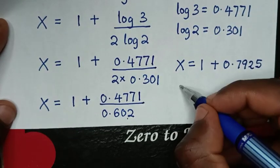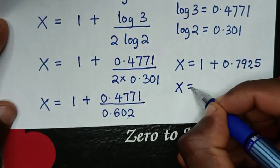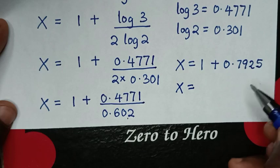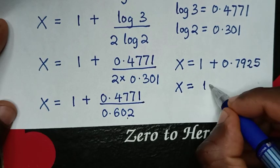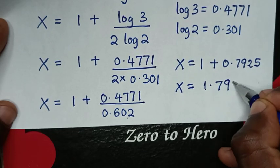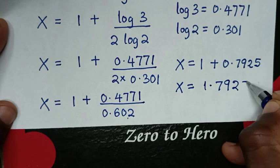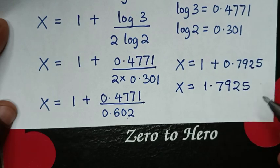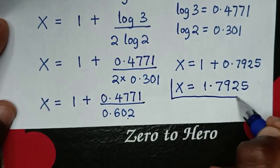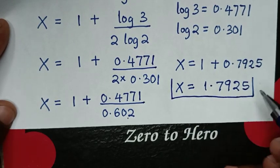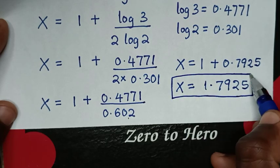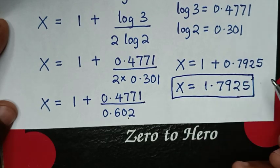Then x is equal to 1 plus 0.7925, which gives us 1.7925. So this is the final answer for the value of x in this problem.